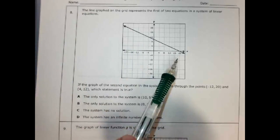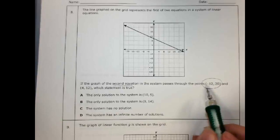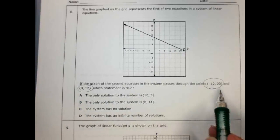It tells me they graphed this line, and there's going to be a second line, and it goes through this point and this point. So let's just graph those two points.